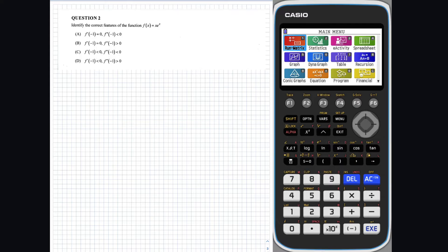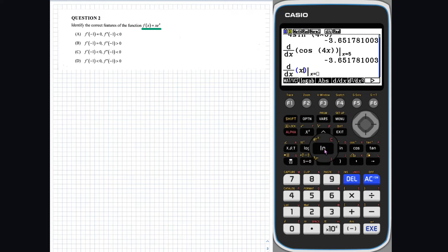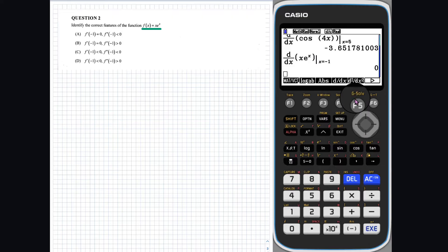Question 2. We need to investigate f of x at x equals negative 1 and see whether the first derivative is equal to 0 or whether it is negative and whether the second derivative is positive or negative. To do this, we can evaluate the first and second derivative at x equals negative 1 on our calculator.